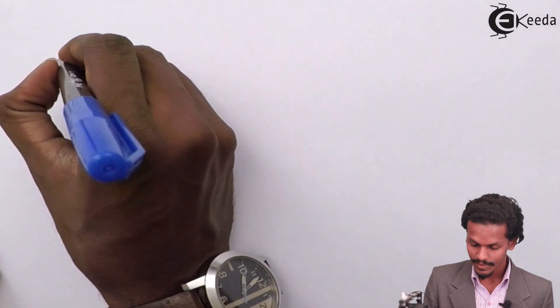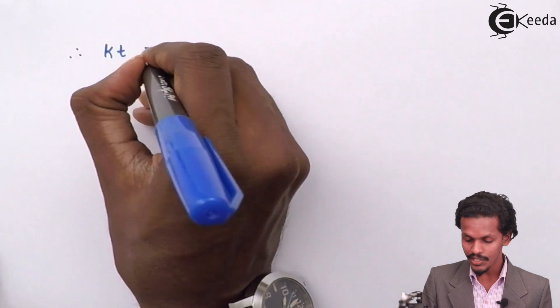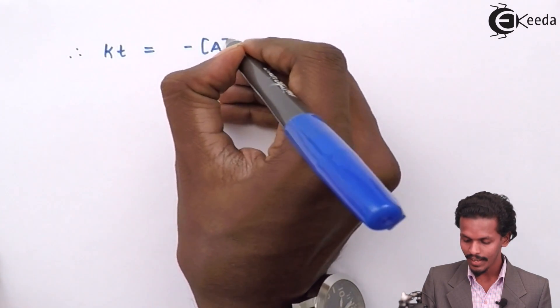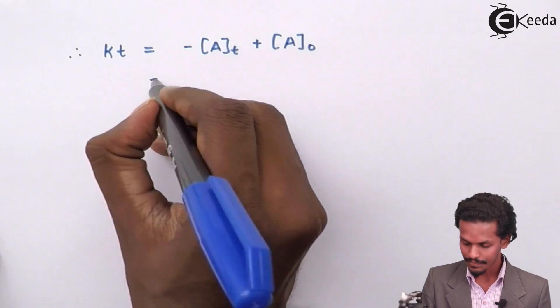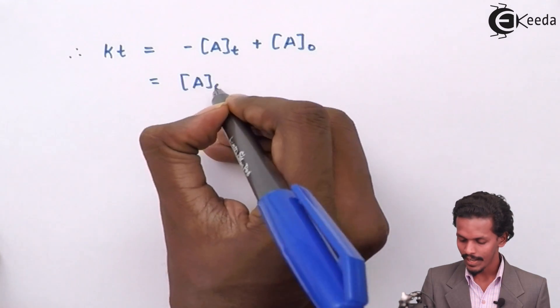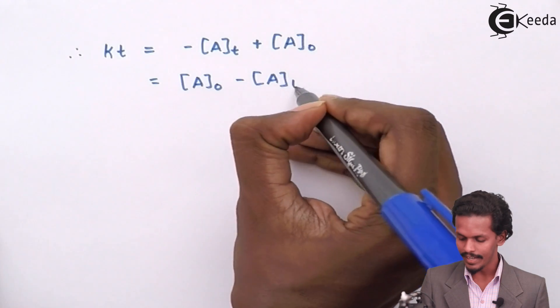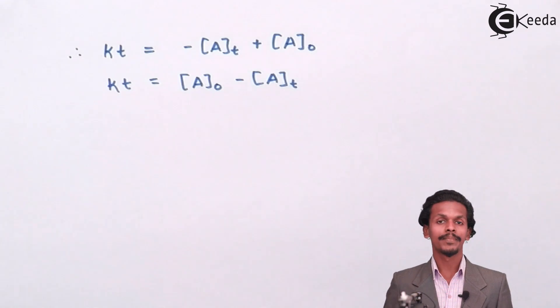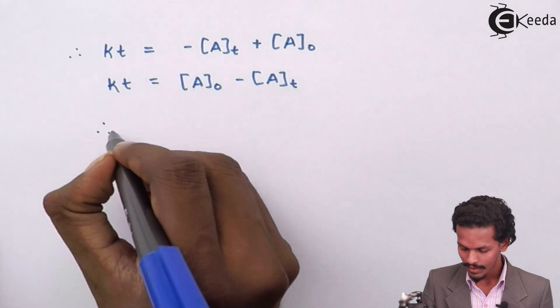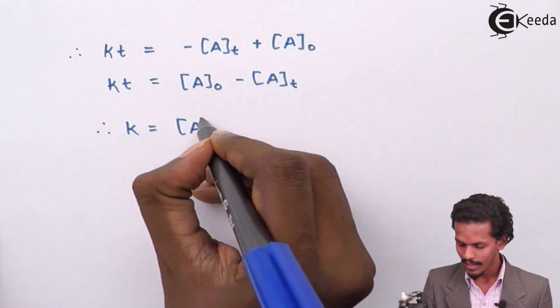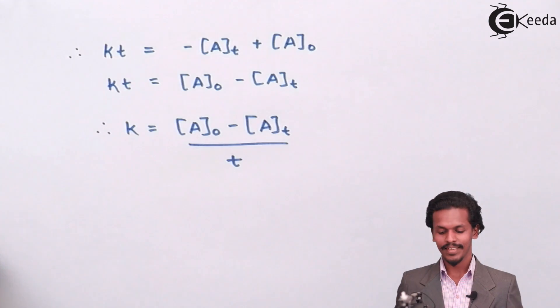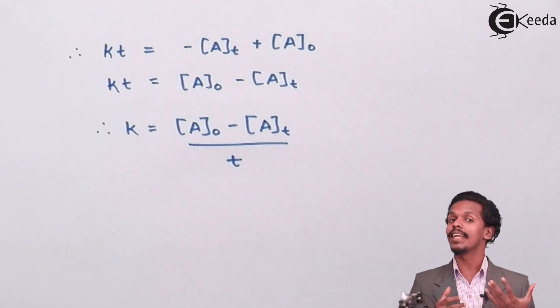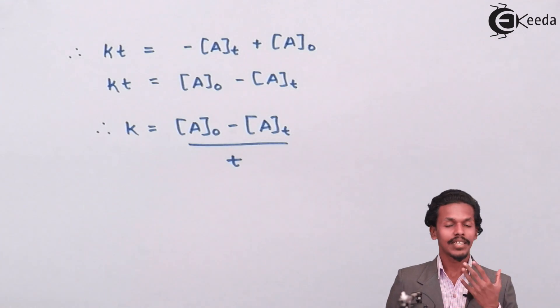By arranging the above equation that we have got, we could write the equation as Kt equals minus [A]ₜ plus [A]₀, that could be written as [A]₀ minus [A]ₜ. This equation can be finally written as k equals [A]₀ minus [A]ₜ divided by t. So this is the final equation that we have derived showing the relation between the rate constant for a zero order reaction.